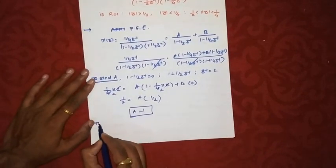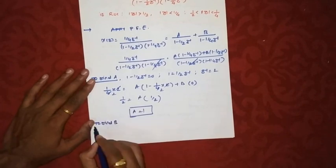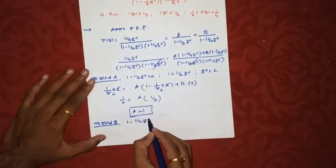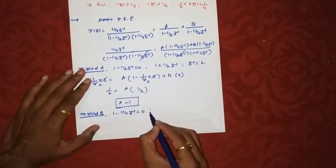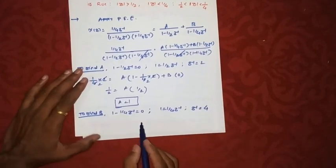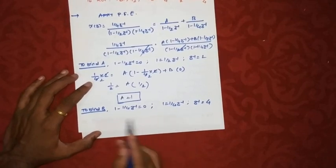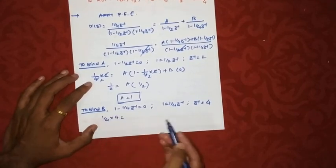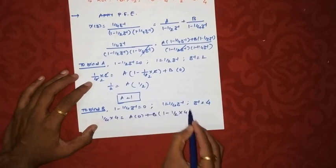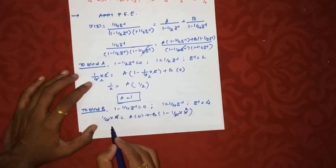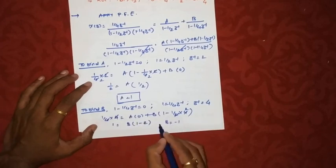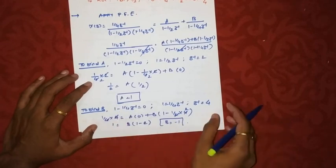Similarly, to find B, A must be zero. We equate (1 − (1/4)z⁻¹) = 0, giving z⁻¹ = 4. Substituting: (1/4)(4) = 0 + B·(1 − (1/2)(4)), so 1 = B·(1 − 2) = B·(−1). Therefore B = −1. We now have A = 1 and B = −1.